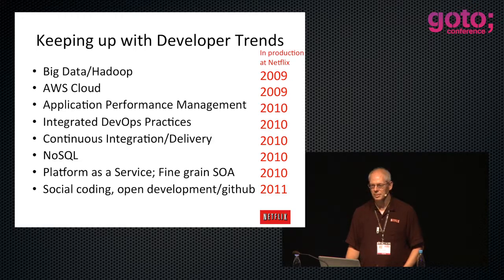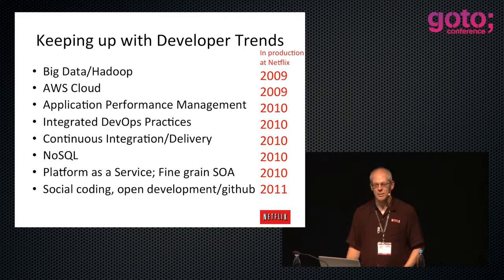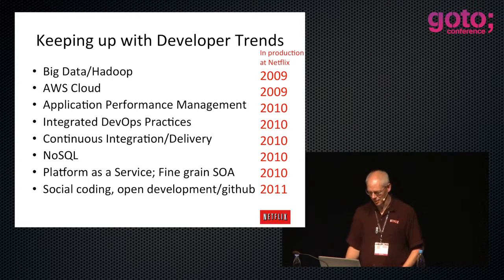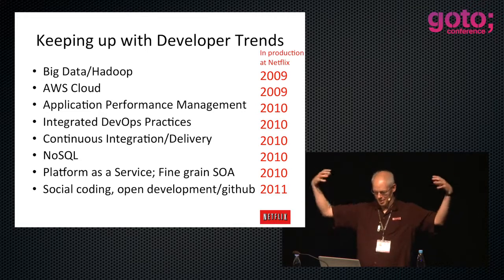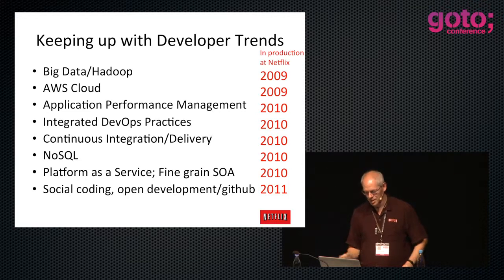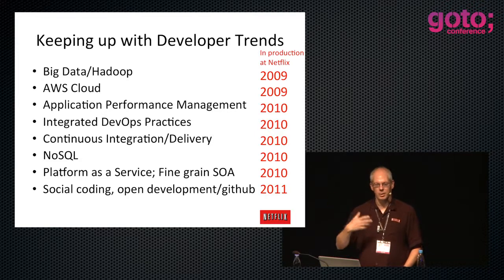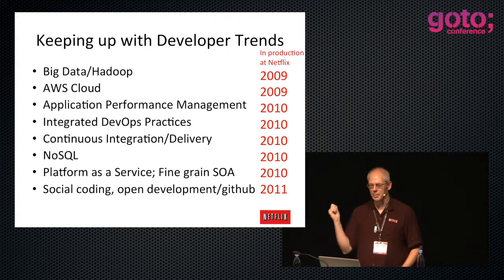NoSQL. Platform as a service. Fine-grain service-oriented architecture - I got one person doing fine-grained SOA; the rest have one big application. Social coding, open development on GitHub - is your application code that you developed on GitHub the source of your build that you put in production?